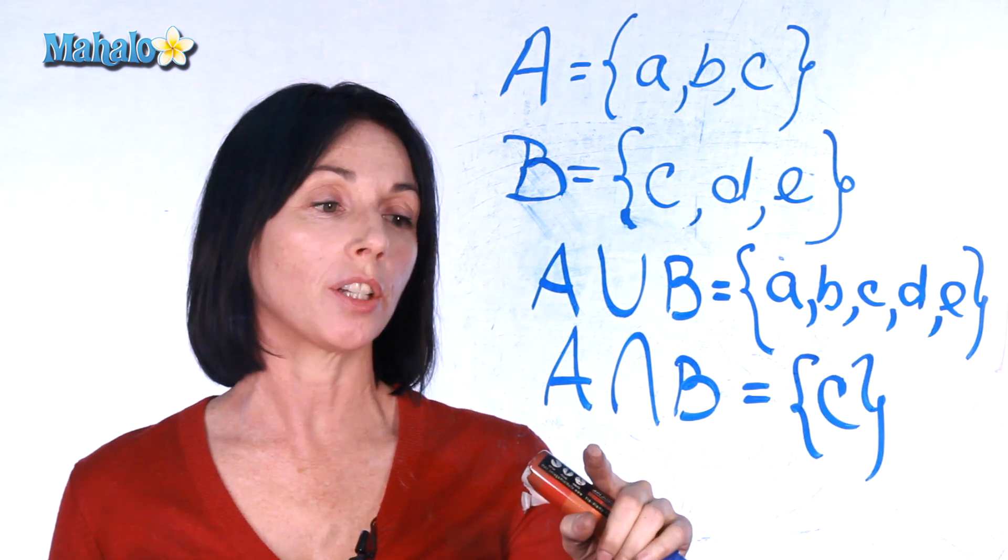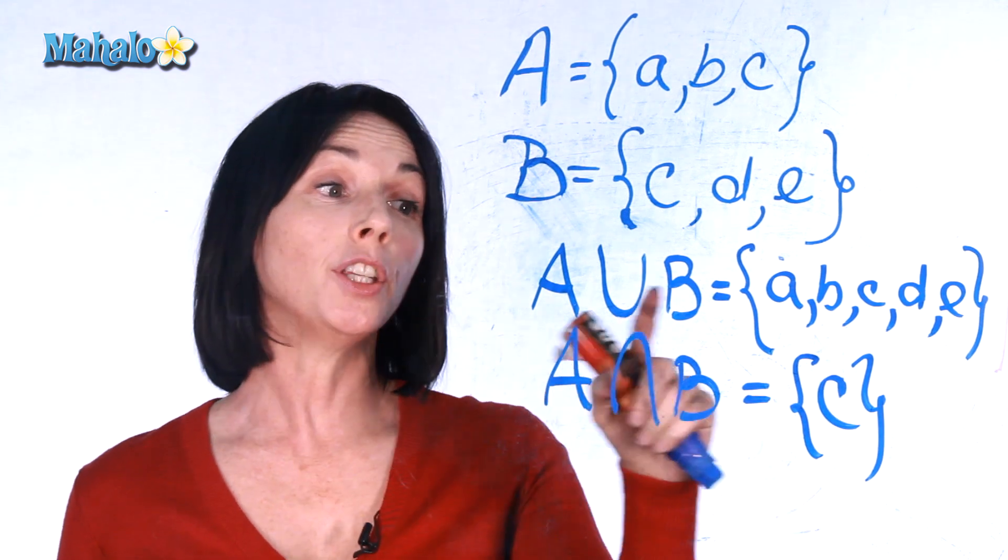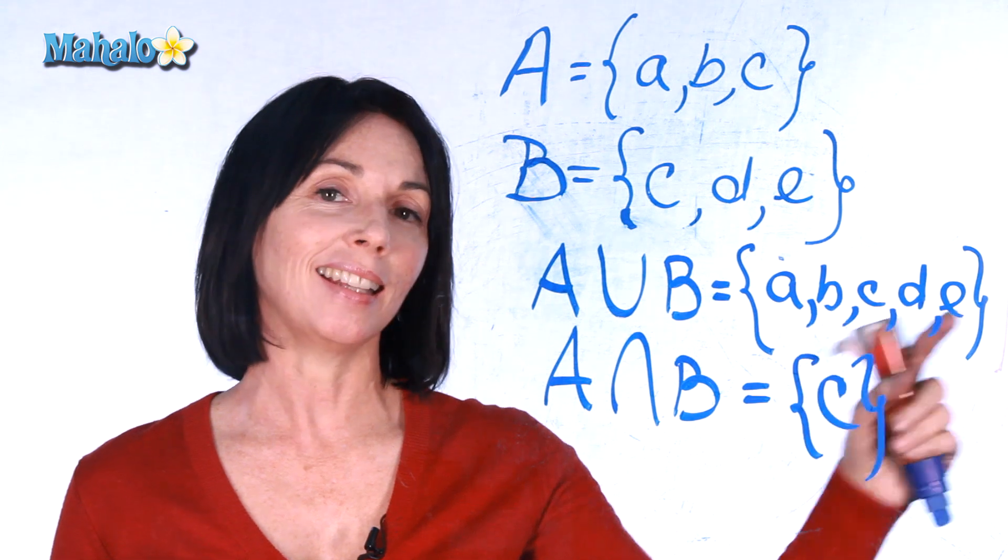So the intersection of sets A and B is a new set, the set of C. And the union of sets A and B is a new set, the set A, B, C, D, and E.